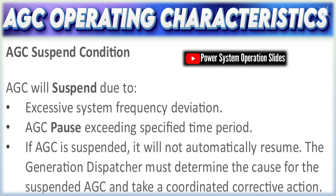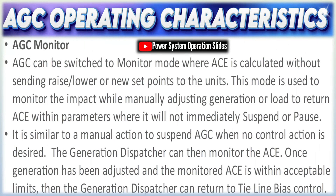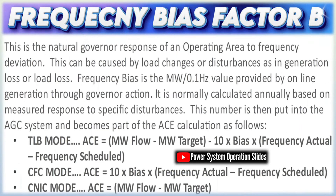The frequency bias factor plays a pivotal role in AGC by linking frequency deviations to required changes in power. Essentially, it quantifies how much extra power should be dispatched for every unit hertz of frequency deviation. For example, if the grid frequency drops below nominal, a higher bias factor ensures that the AGC quickly commands additional generation to arrest the frequency decline. Conversely, if frequency rises, it prompts a reduction in generation. The closer this bias factor is tuned to the actual frequency response characteristics of the control area, the more effectively the AGC minimizes deviations and enhances grid stability. Miscalculation in this parameter could lead to either sluggish or overly aggressive responses, potentially threatening system reliability.